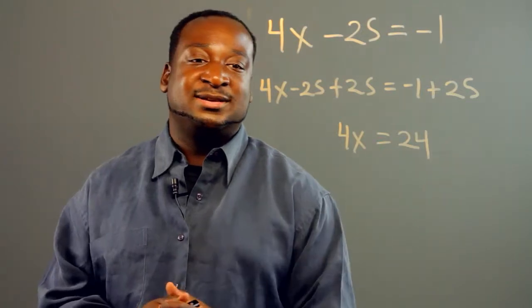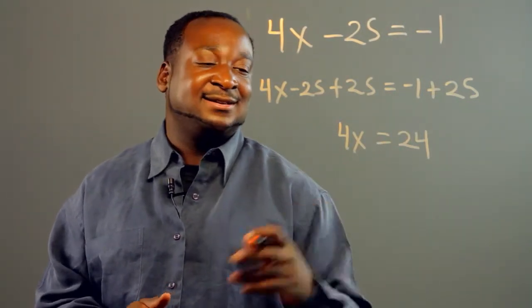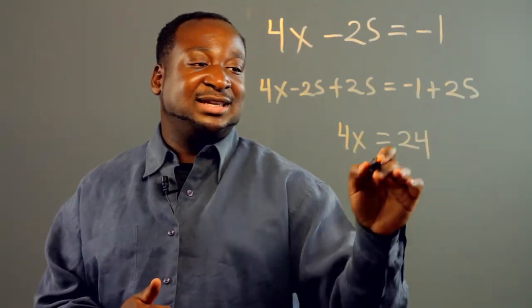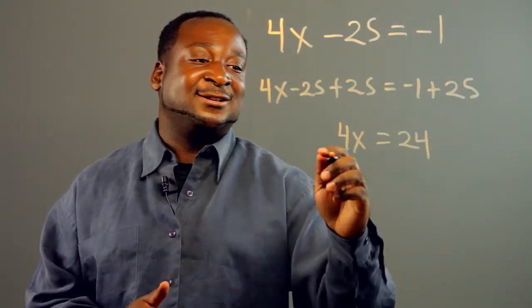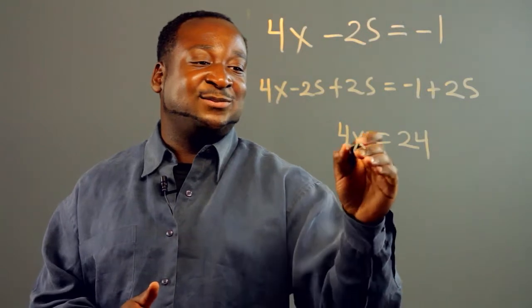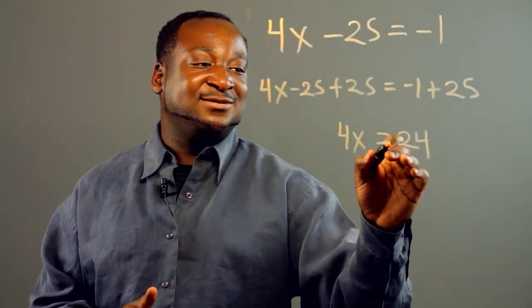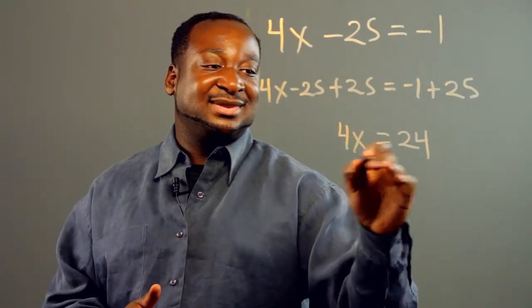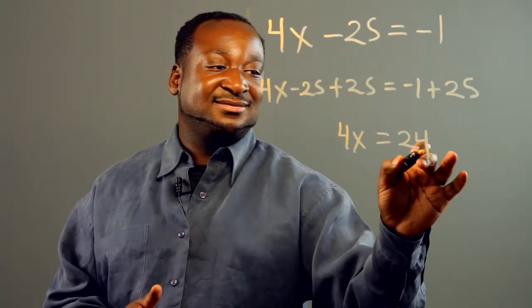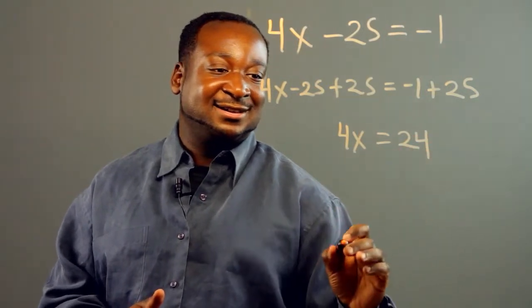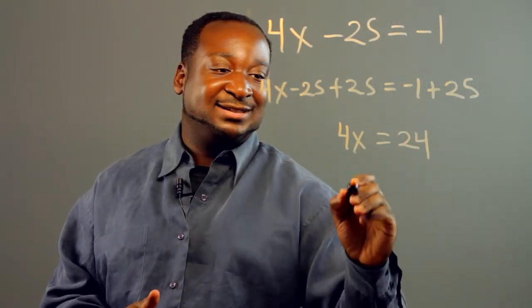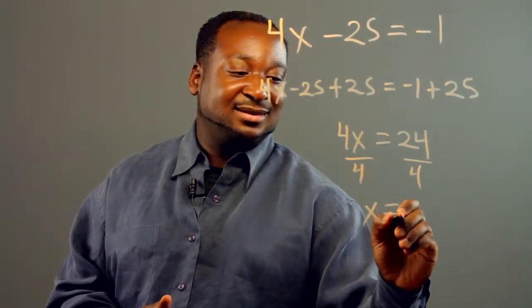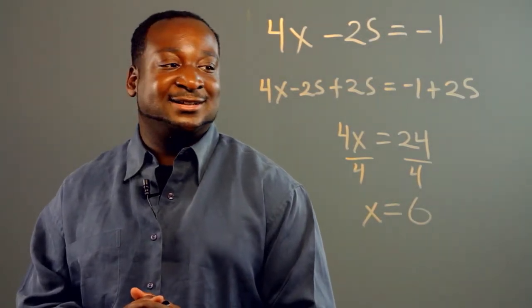And now since we want to solve for x, we know that x times 4 gives us 24. So what we want to do here is, since we know that the product is equivalent to 24, we know that if we divided this number, we would get our value for x. So dividing both sides, we get x is equivalent to 6.